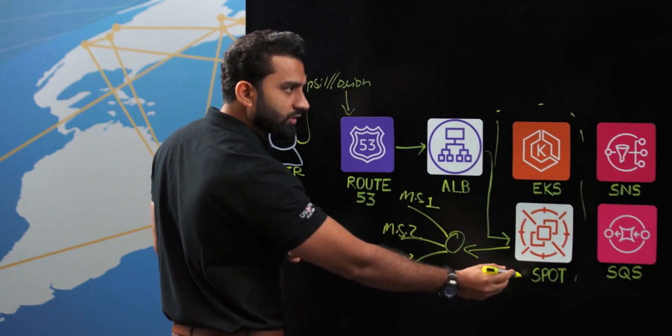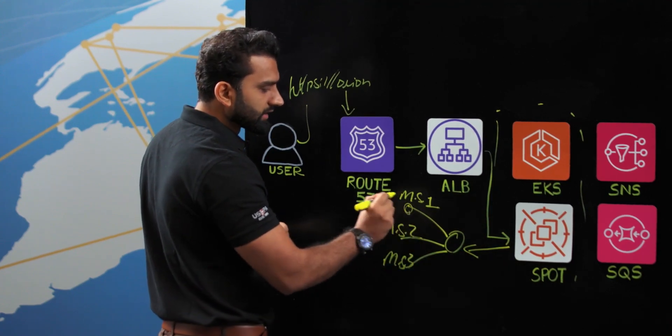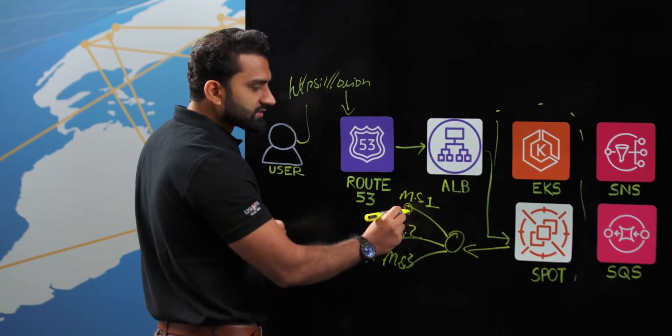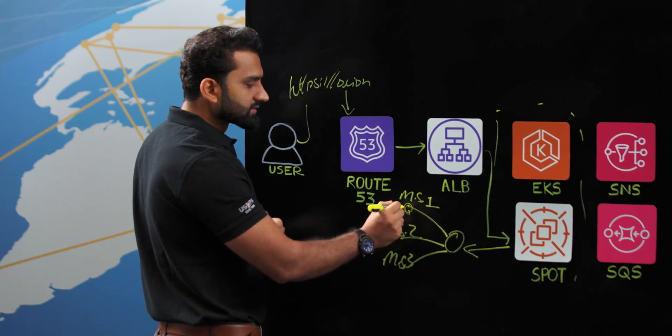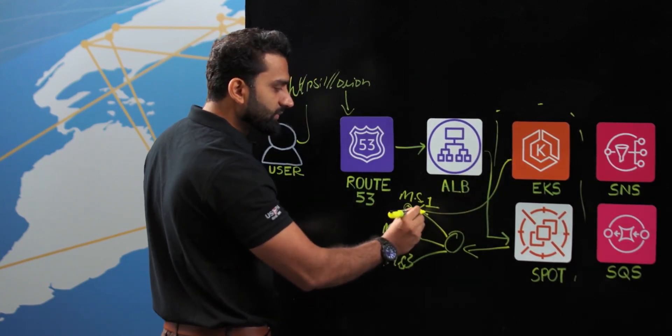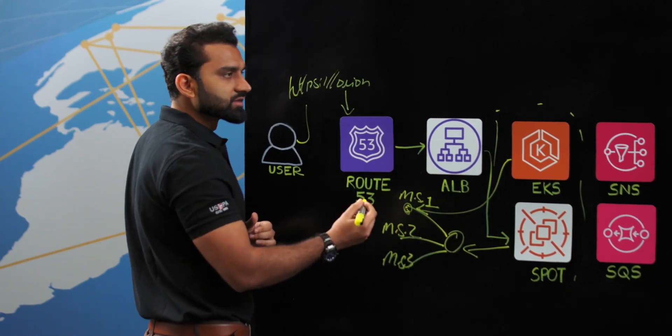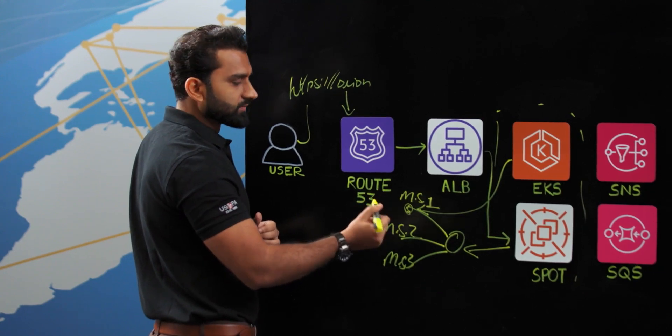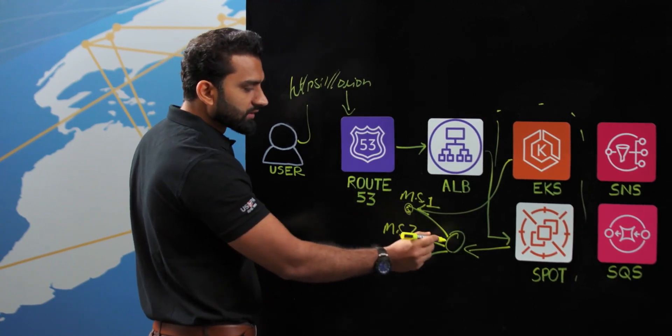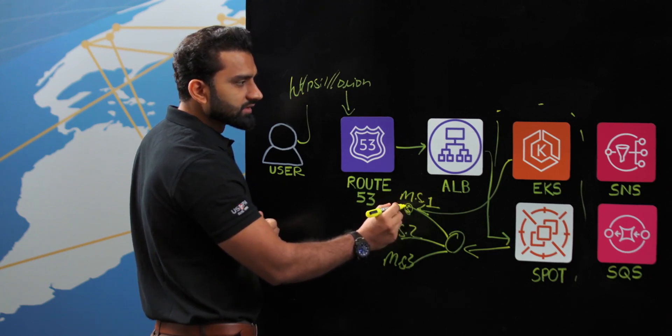Now as we are running everything on spot, there is a strong likelihood that before this job gets completed, the spot instance terminates the underlying node and this job gets disrupted. EKS takes care of replacing this job with another job, but ultimately the process was not able to finish the task that it was assigned to.